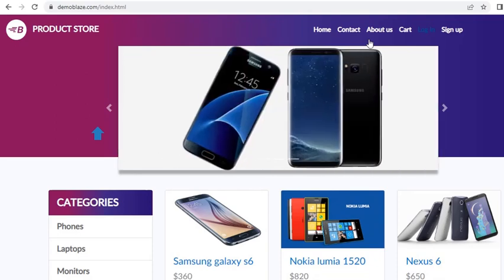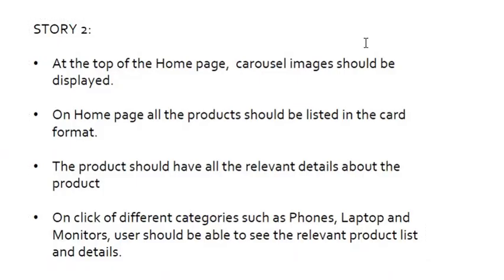We have two more user stories. The second user story talks about: at the top of the home page, carousel images should be displayed — those moving images should be shown. On the home page, all products should be listed in card format. The product should have all relevant details, and on clicking different categories such as phones, laptops, and monitors, users should be able to see the relevant product list and details.